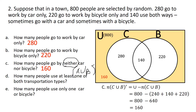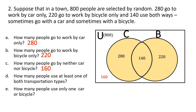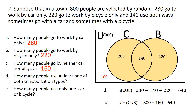Fourth question: how many people use at least one of both transportation types? The keyword 'at least one' means the union of the two sets. We add all values inside the circles: 280 + 140 + 220 = 640. Alternatively, U − complement of union = 800 − 160 = 640. The answer is 640.